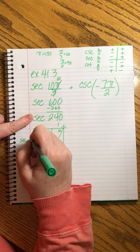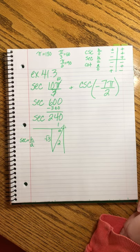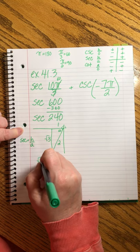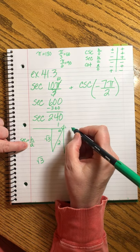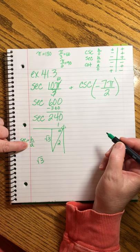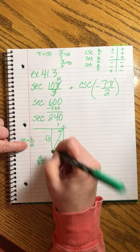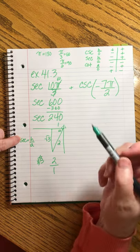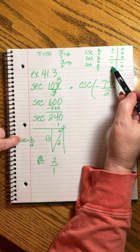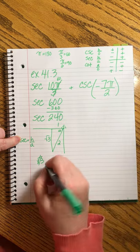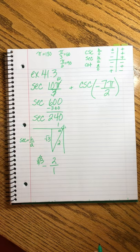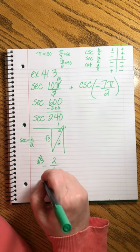Secant equals ha, right? So the secant of 240 will be the hypotenuse, which is 2 over the adjacent, which is 1. And secant goes with cosine in the third quadrant. Cosine is negative. So this is minus 2 over 1 for the secant of 10π over 3. Crazy, right? All right, so that's good. We're all the way down to here. Now we're going to add to it whatever we get on this side.